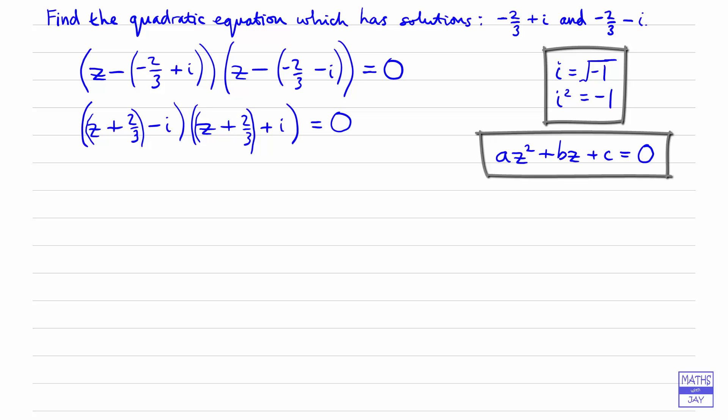So for example we know that if we're multiplying x minus y by x plus y, that's the same as x squared minus y squared. So that's really what we've got here, isn't it? We've got x is z plus two-thirds and y is i. So that means that when we multiply this out, all we need to do next is write z plus two-thirds squared minus i squared is zero.